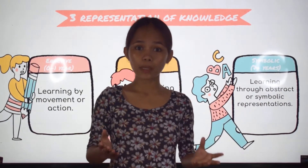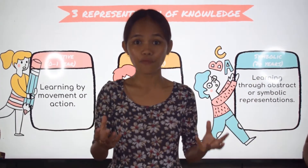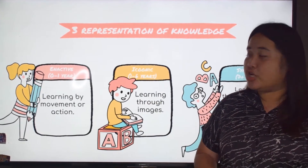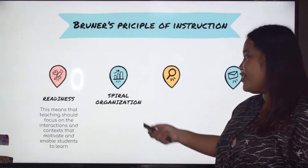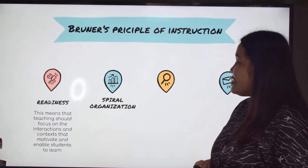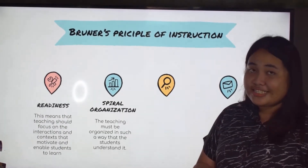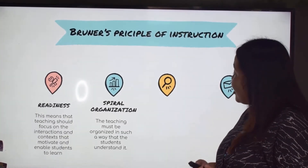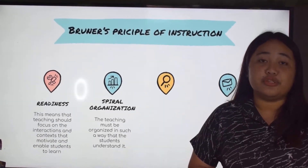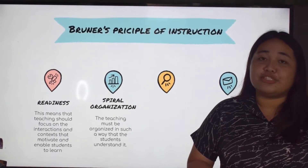Or a child might also tell his teachers that he knows something by writing an essay or journal in the form of words. Now, let's go deeper into Bruner's principles of instruction. He has four. First, readiness — teaching should focus on the interactions and contacts that motivate and enable students to learn. Second, the spiral organization — teaching must be organized in such a way that students understand it, and it is crucial that the teacher lay his points in chronological order to avoid misconceptions and misunderstandings.